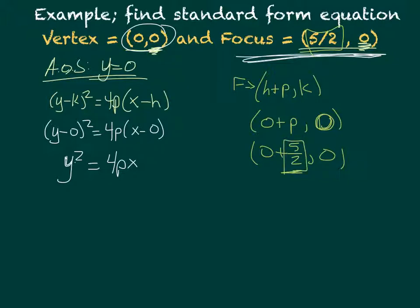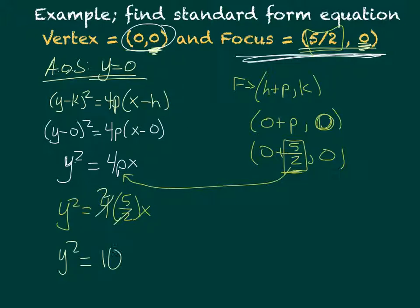I put 5/2 in for p and simplify. That gives me y² = 4(5/2)x. Simplifying, 2 times 5 is 10, so y² = 10x. That is my standard form equation.